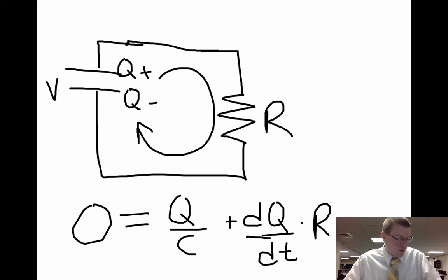I want to solve for the amount of charge passing through the resistor each second. Put my Q's and dQ's together and get everything else to the other side. So I'm going to do a bit of algebra here.